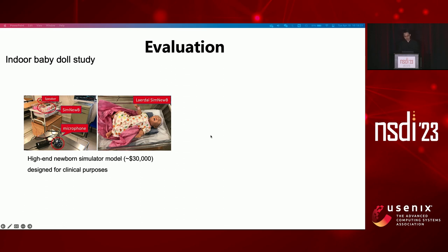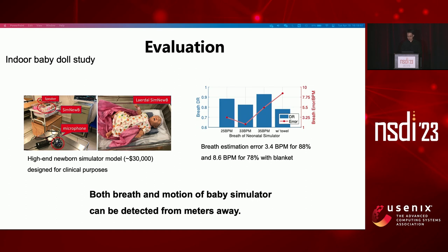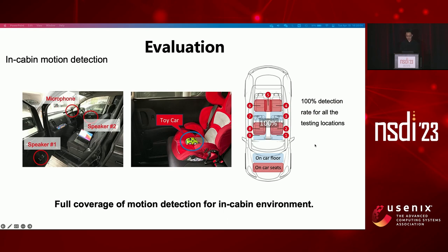We performed evaluations with a high-end baby simulator commonly used for clinical purposes. The baby model breathed at different rates and moved its arm randomly. The breath estimation error was within 3.4 breaths per minute (BPM). With a blanket covered on its body, the error increased to around 8.6 BPM. Our system was placed more than 1 meter away, making it less intrusive to the baby. To simulate minor motions, we put a toy car inside the cabin and let it move around, with two speakers on the front door and a microphone on the front control panel. Under this setting, there was no blind spot inside the car, which is better than sensor-based and camera-based CPT systems.